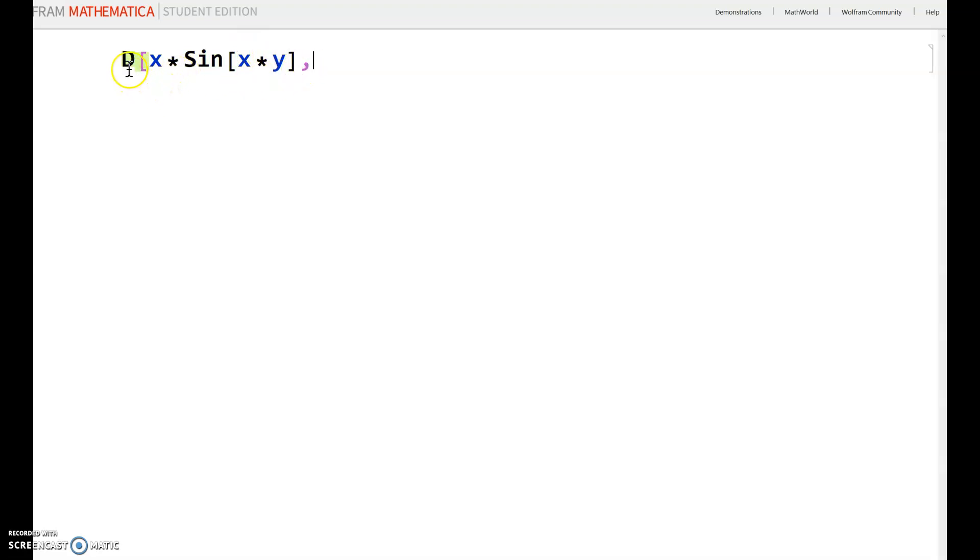First you type capital D, then the function you want to do the derivative of, then comma, then the variable you want to do the derivative with respect to, in this case x. Then closing brackets and shift enter.